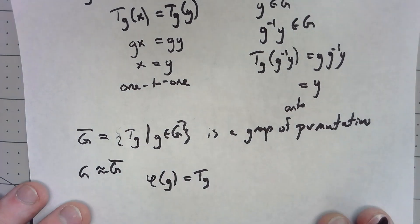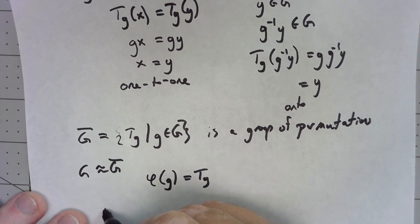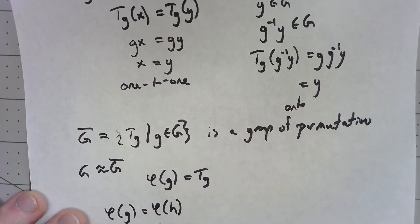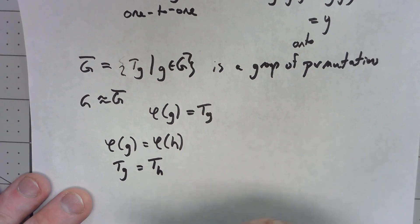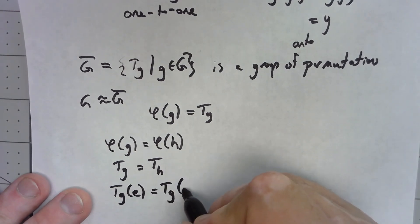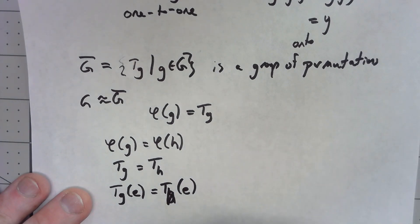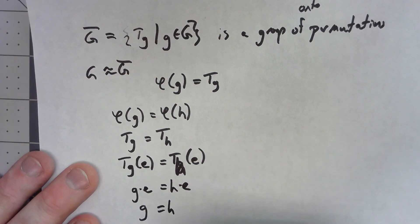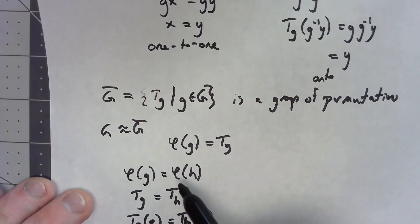Suppose φ(g) equals φ(h), meaning t_g equals t_h. Remember that t_g and t_h are functions, and for functions to be equal they must map every element in the domain to the same thing. Specifically, t_g(e) must equal t_h(e), which means g times e equals h times e, which means g equals h. So if φ(g) equals φ(h), then g must equal h — φ is one-to-one.